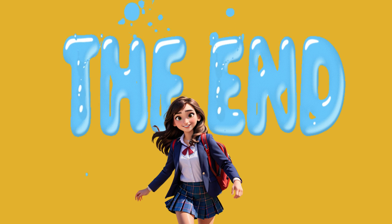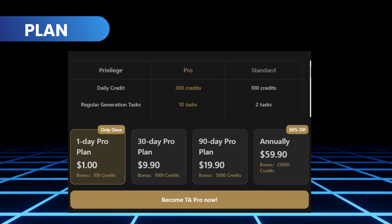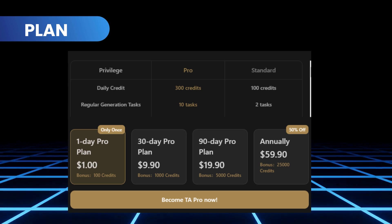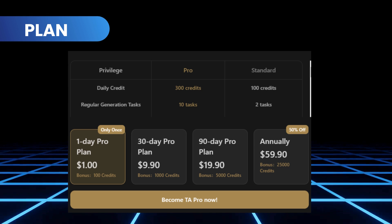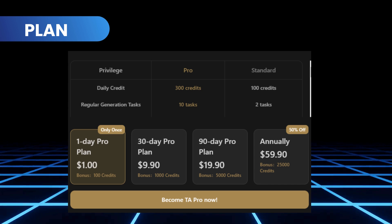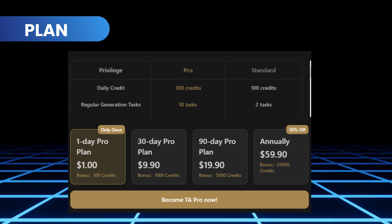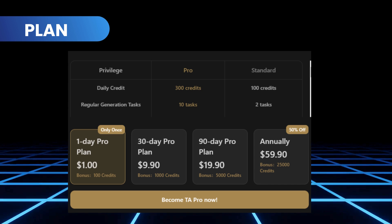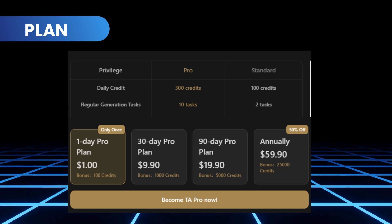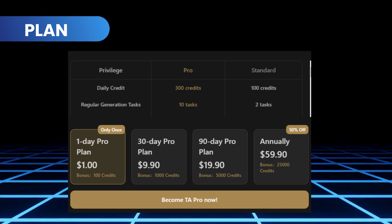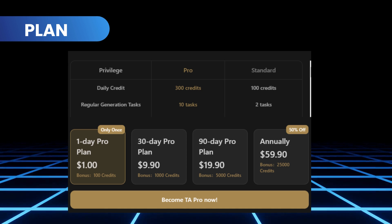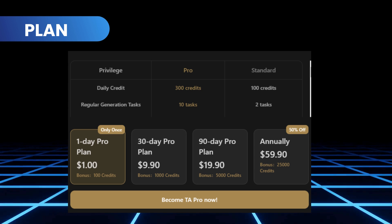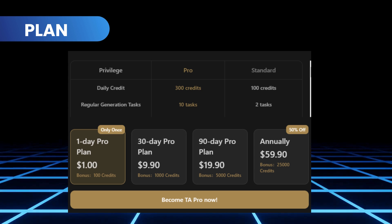If you want to generate more than that, they also have a membership plan you can check out. For a one-day ProPlan, it costs only $1. For a 30-day ProPlan, $9.90. For a 90-day ProPlan, $19.90, and for annually, $59.90.